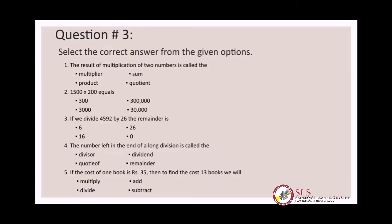Number four: the number left at the end of a long division is called — divisor, dividend, quotient, or remainder? We have learned that the number which is left over in long division is called the remainder, so we will circle remainder from the options.